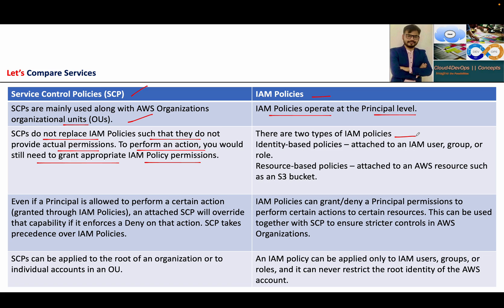We have two types of policies within IAM. Identity-based, which is attached to your IAM user, group, or a role, and resource-based, which is more towards your S3 bucket or EC2 instances. For example, if I want access from an EC2 instance to an S3 bucket, I will create a role with IAM permission to connect to the S3 bucket and assign that role to the EC2 instance. Or within the S3 bucket, you can create a policy — those kinds of policies come under resource-based policies.